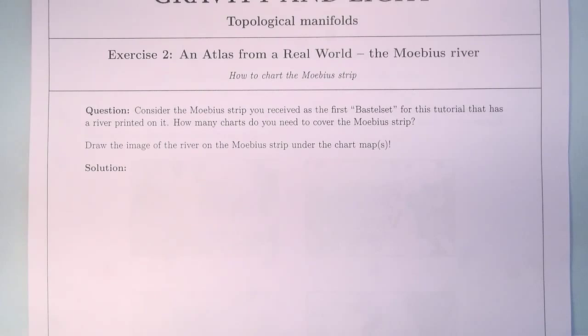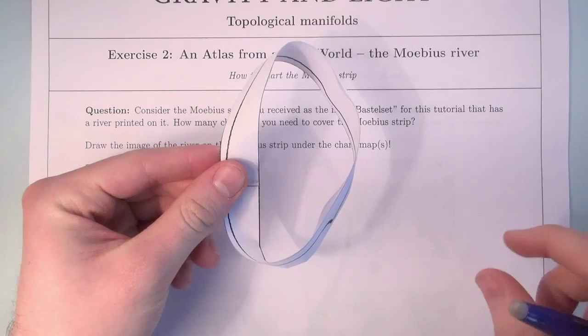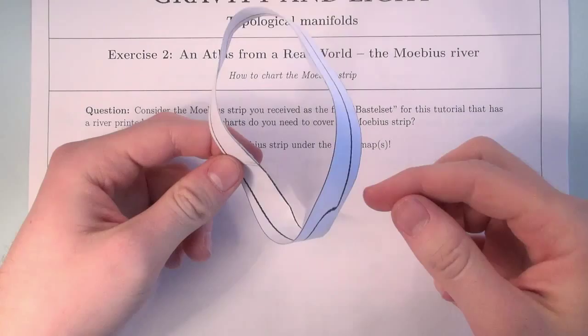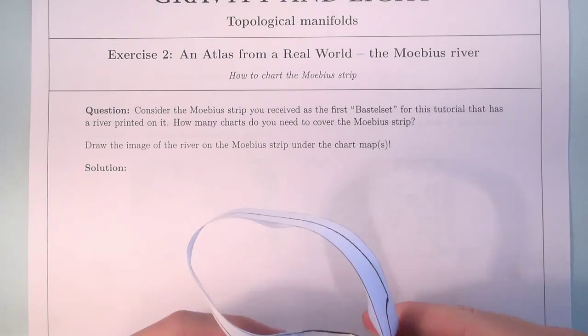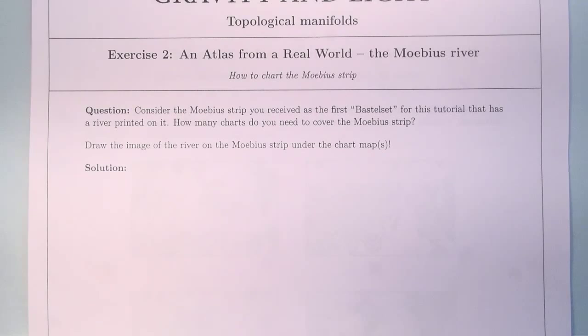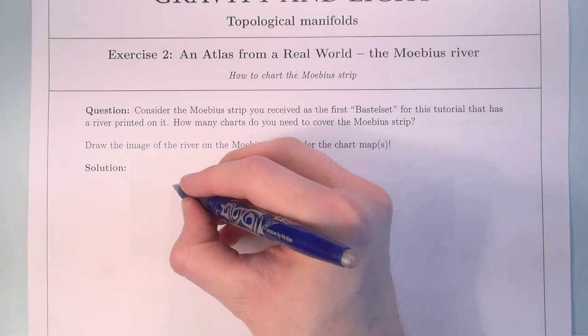Now we go to the second exercise. We look at the Möbius Strip, which has a river printed on it. From this Möbius Strip, which is our manifold, we want to build an atlas. So let's look at the Möbius Strip.